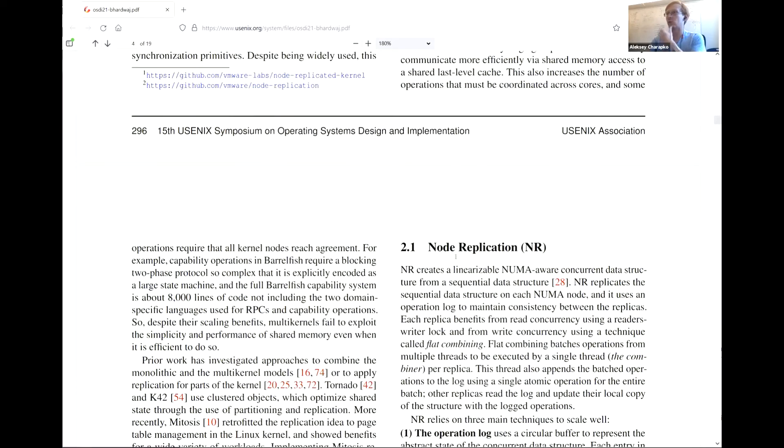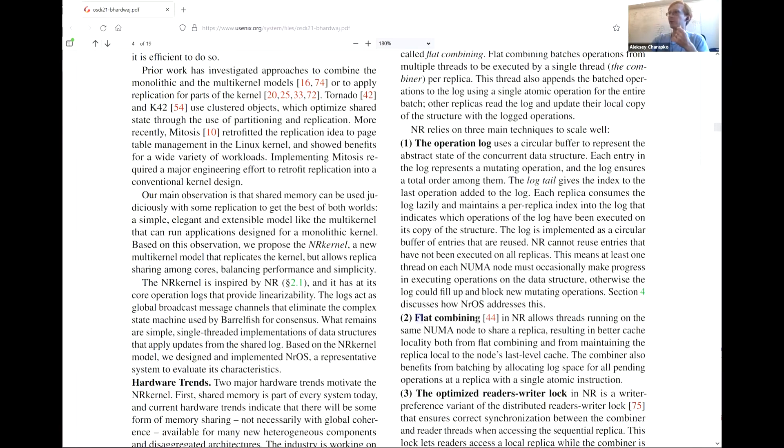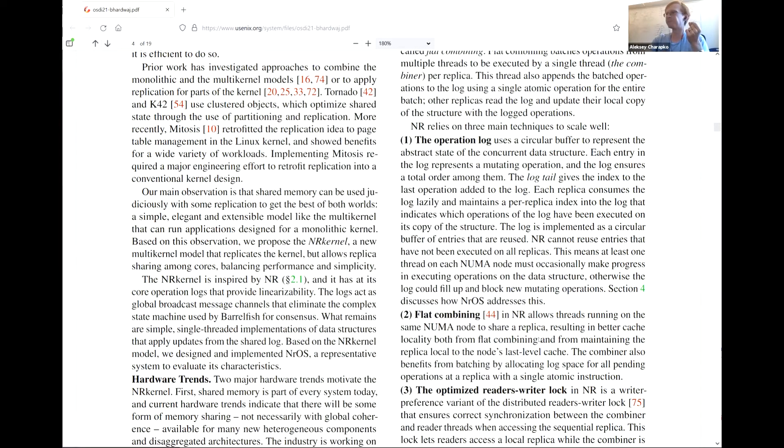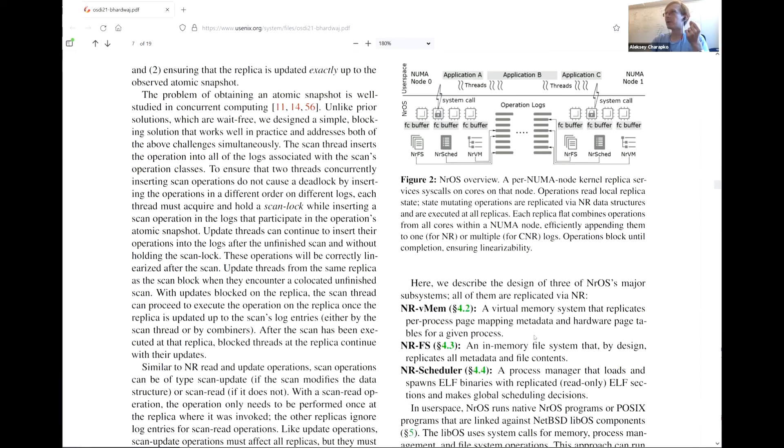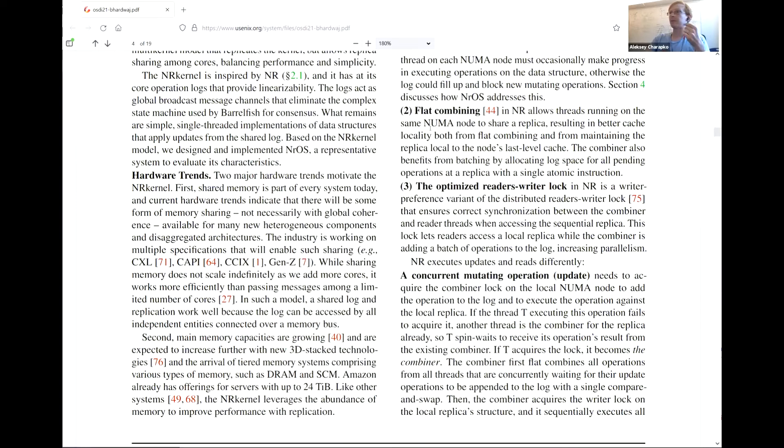So, for this coordination, they use some so-called, they call it node replication. And particularly this coordination that the NUMA node is done with flat combining. So, the idea here is, let's say you have 24, 28 cores. It doesn't matter. So, you have like a multi-core CPU that essentially makes up this one replica that exists in one CPU's memory. So, it's one NUMA node. So, when some thread running on this CPU, one of this 24 cores, essentially when one thread needs to update this data structure, it tries to become what's called the combiner in this kind of architecture.